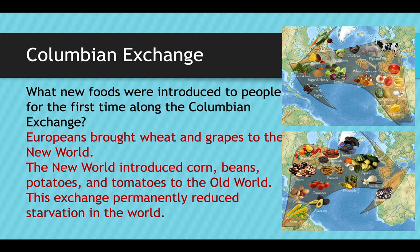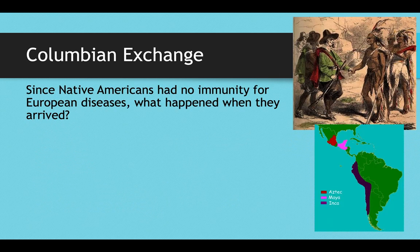For example, Ireland became known for their potatoes — but before 1492, no Irishman had ever seen or eaten a potato. Italy became very well known for tomatoes, yet before 1492, no Italian had ever seen a tomato. One positive effect of the Columbian Exchange was that it led to the spread of more food, increased the world's food supply — because many of these crops grew very well in the lands they were introduced to — and permanently decreased world hunger and starvation.